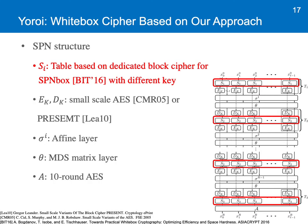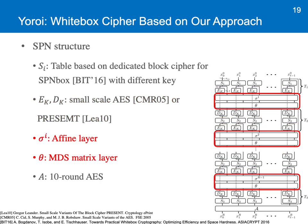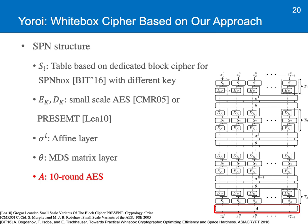Based on these approaches, we constructed Yoroi, which is composed of five elements. First, table SI, which is based on the dedicated block cipher for SPN box, with different keys for S1, S2, and S3. Second, EK and DK — in our construction, small-scale AES or small-scale PRESENT are suitable. And an affine layer and MDS matrix layer — it is important to note that the output of EKI never goes through these layers, so that it can keep the same functionality even after table updates. And finally, 10-round AES in the last round. The reason why we put this AES layer is that it simplifies the security evaluation in the black box setting.